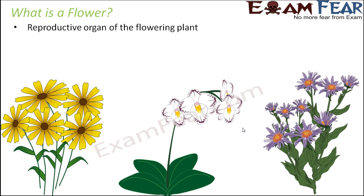Flower is the reproductive organ of the plant. Leaves prepare food for the plant, which helps it survive. But a day will come when the plant grows too old and has to die. If there is no reproduction, all plants will end — there will be no plants left on earth. So there has to be reproduction, and the flower is the reproductive organ that helps in producing similar plants over and over again.